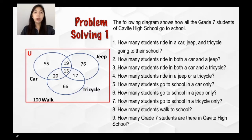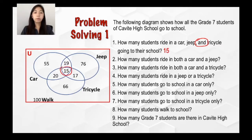For the first question, how many students ride in a car, gyp, and tricycle going to their school? Upon looking at the question, it actually made use of the word 'and'. This word will tell us that the operation involved is intersection. So that means that we're going to look at the intersection of the three sets. Looking into the Venn diagram, here is the intersection of the three given sets. So that means that there are 15 students who ride in a car, gyp, and tricycle going to their school.